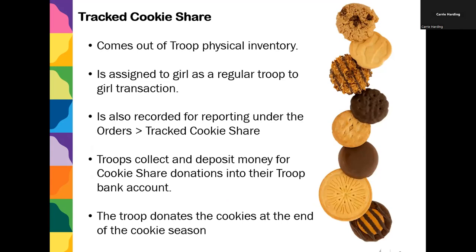Tracked cookie share is coming out of your troop's physical inventory. You're going to assign that transaction to the girl — a regular troop-to-girl transaction. So if the girl comes to you with $5 or $6 and says she has a donation, you collect that money and go into Smart Cookies to give her a package of cookies. Then you hold that package aside until the end of the season for your troop to donate to somewhere like the Ronald McDonald House or the fire station.